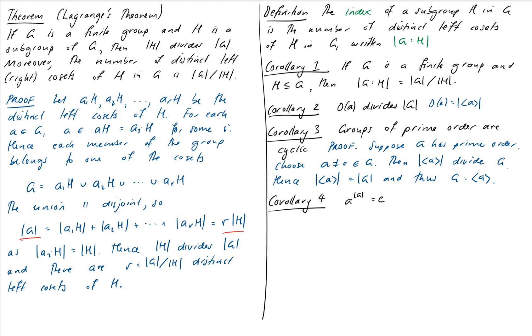The next corollary says that A to the order of the group is the identity. Now that we know that the order of an element divides the order of a group, we know that the order of A divides the order of the group. So the order of the group is equal to K times the order of A. So A to the order of the group is equal to A to the order of A to the K, which is the identity as required.